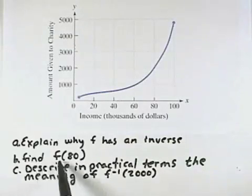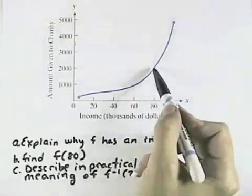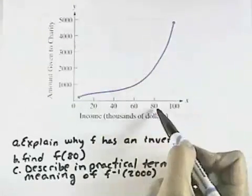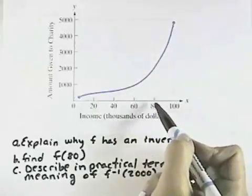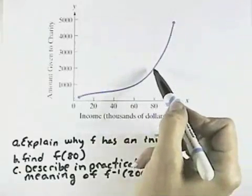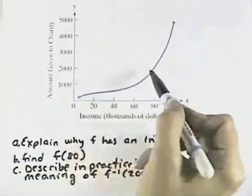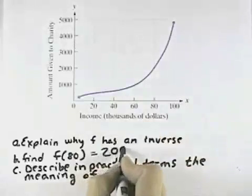We also want to find f of 80. That means find 80 and what is the function value at 80? Reading it off, when our value of income is 80, we can see that the amount of giving to charity is equal to 2,000. And so f of 80 is equal to 2,000.